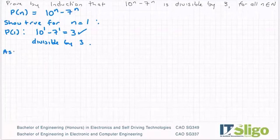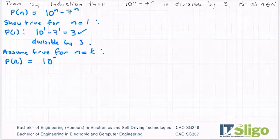We're going to assume true for n equals k. So my expression would become 10 to the power of k minus 7 to the power of k.